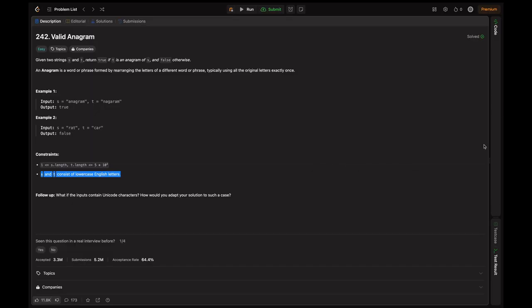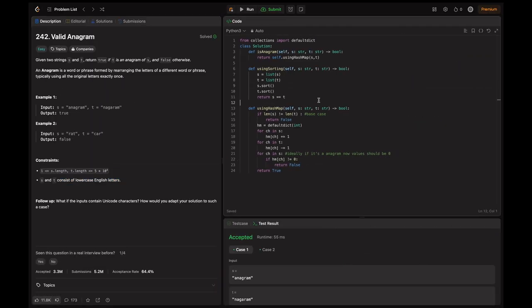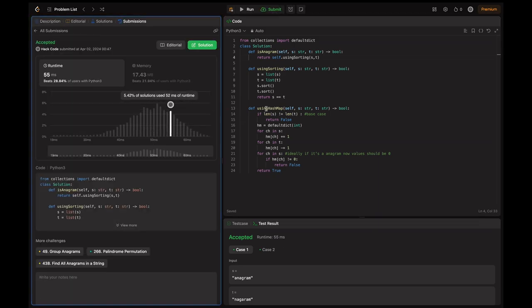Next is demo and conclusion. I got the code ready here. I wrote two methods for two different approaches. Let's try submitting each of them. Yeah, this is an accepted solution. Now I'm submitting the next approach, which is the hash map. This is also an accepted solution. We can see this is more efficient than before.